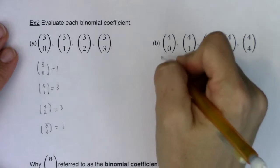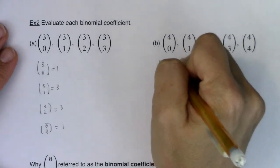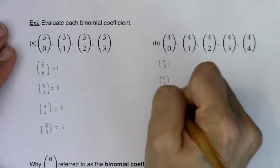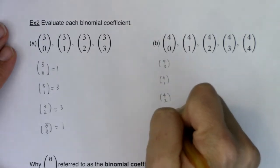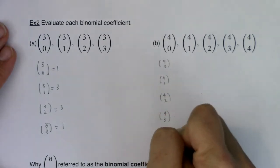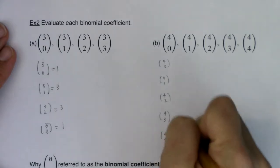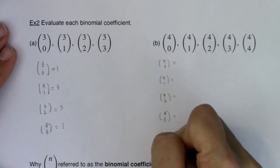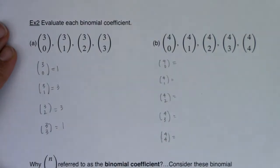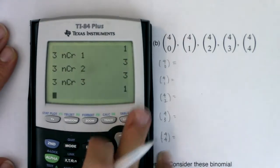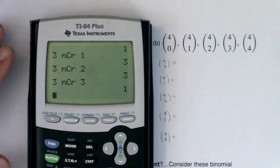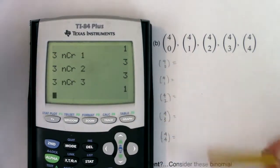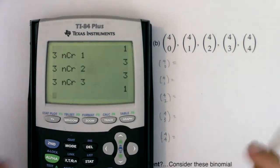So with that, let's try the 4s: 4 choose 0, 4 choose 1, 4 choose 2, 4 choose 3, and finally 4 choose 4. Now just for fun I want to show you how I could be efficient with my lists. If you don't like what I'm about to do, then don't — just do each of these individually.